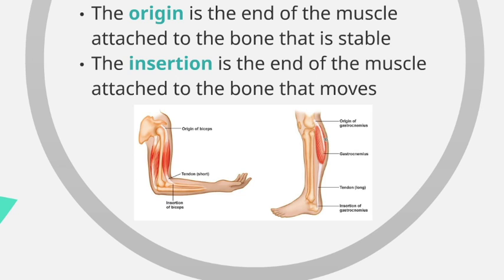Similarly, the origin of the gastrocnemius is connected to the femur, whilst the insertion is connected to the tarsals in the foot. When the gastrocnemius contracts it produces plantar flexion of the foot at the ankle — the toes are pointed.